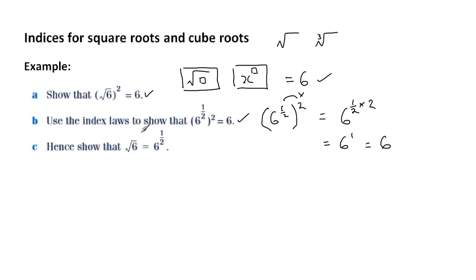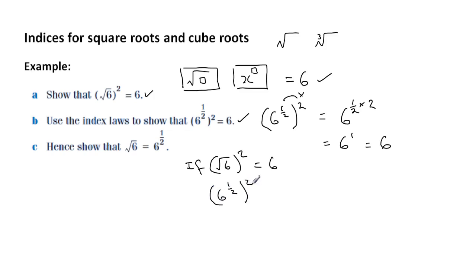The point about this whole exercise is to show that the square root of 6, when we square that, gives us 6. And if 6 to the half, when we square that, also gives us 6, then that means that square root of 6 must equal 6 to the half.